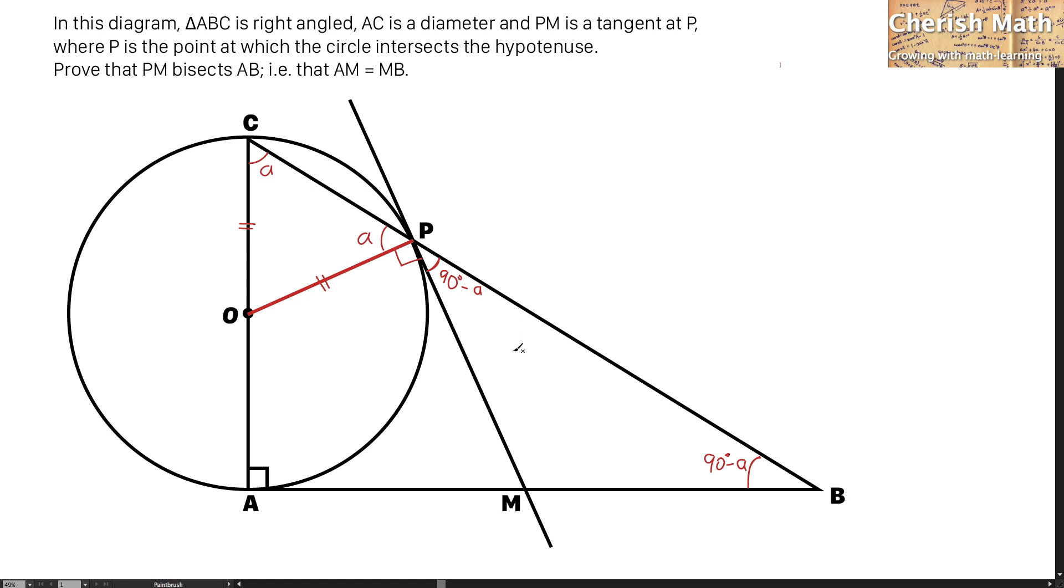So I can confirm here the line MP and the line MB is isosceles, simply because the same angle at the two sides. So MPB, this triangle is an isosceles triangle.